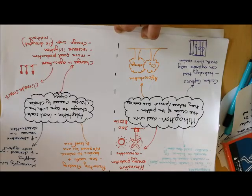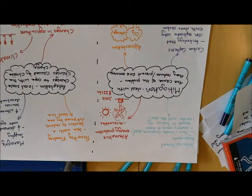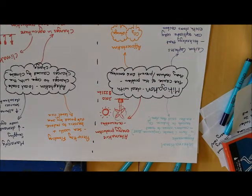So there we've got our clear mitigation and adaptation strategies. Really important you know the difference: mitigation is designed to deal with the cause of the problem, reducing or preventing greenhouse gas emissions in the first place; adaptation is more strategies designed to cope with the changes that climate change is going to bring.